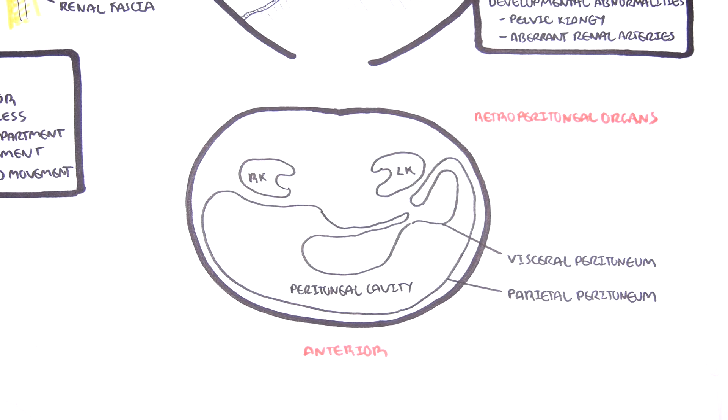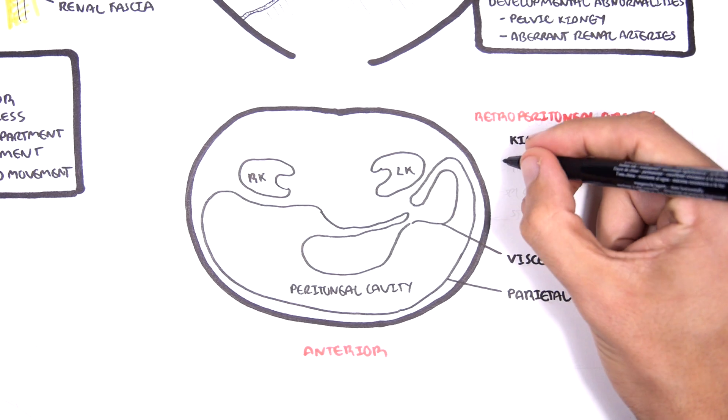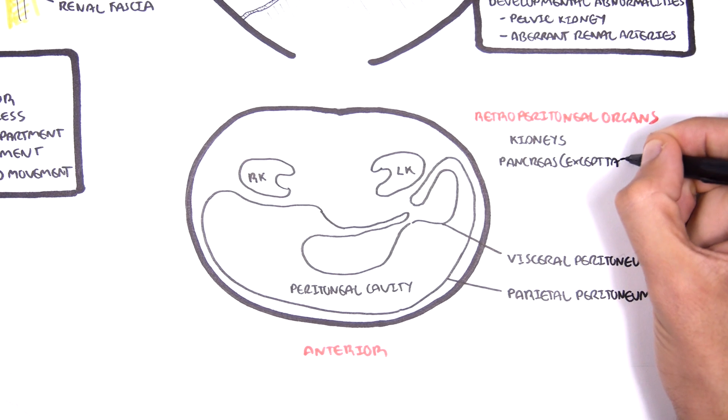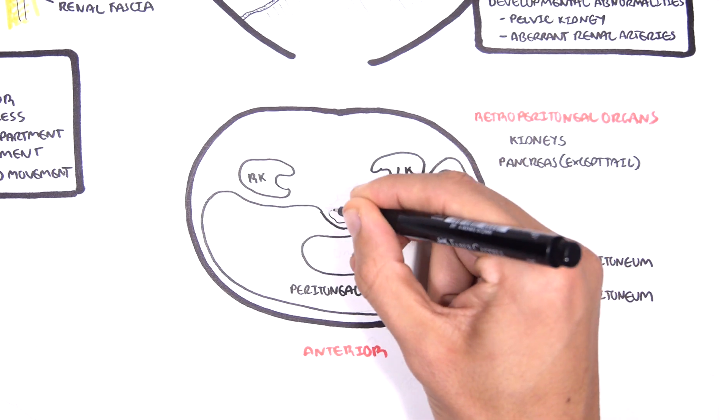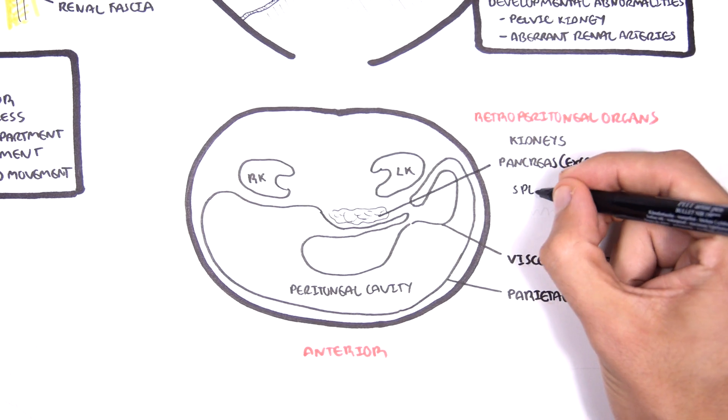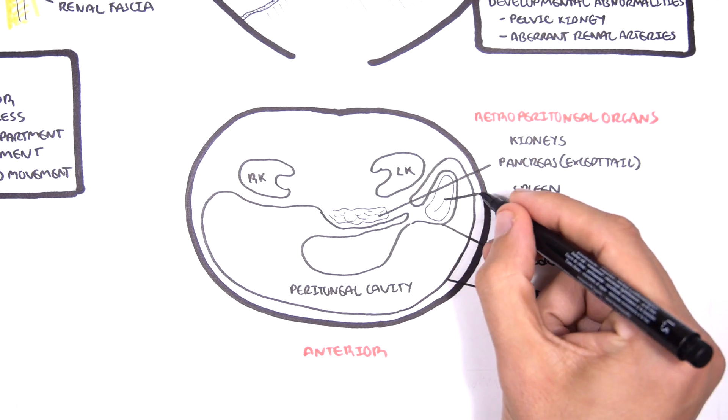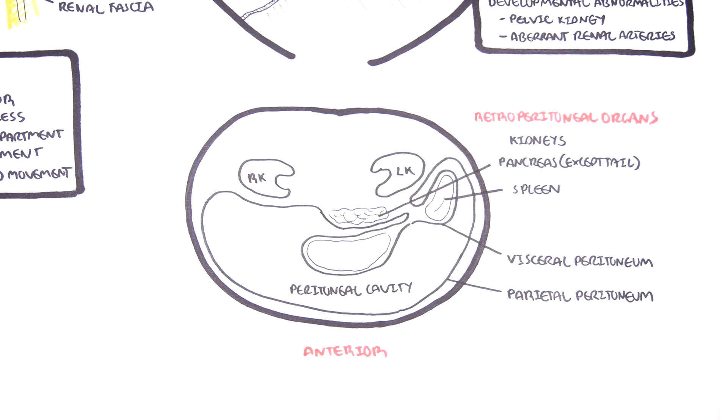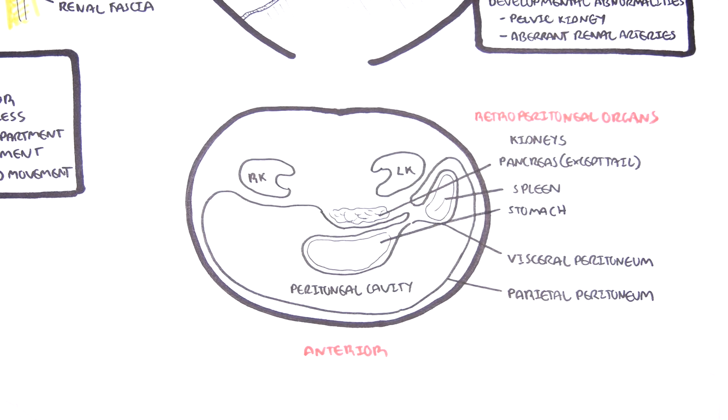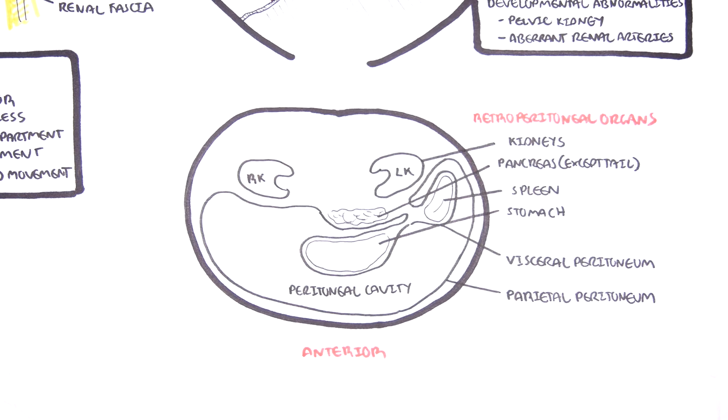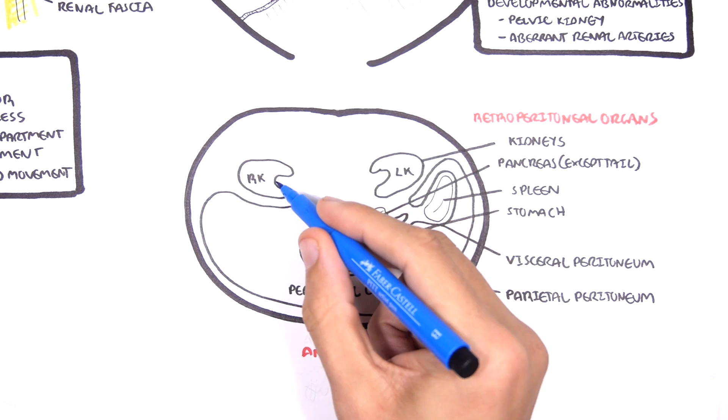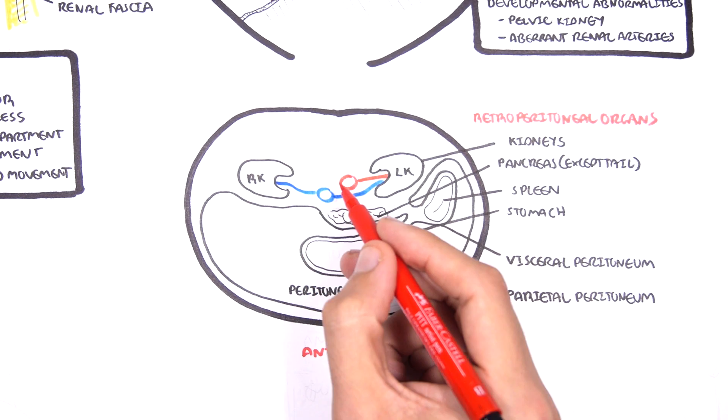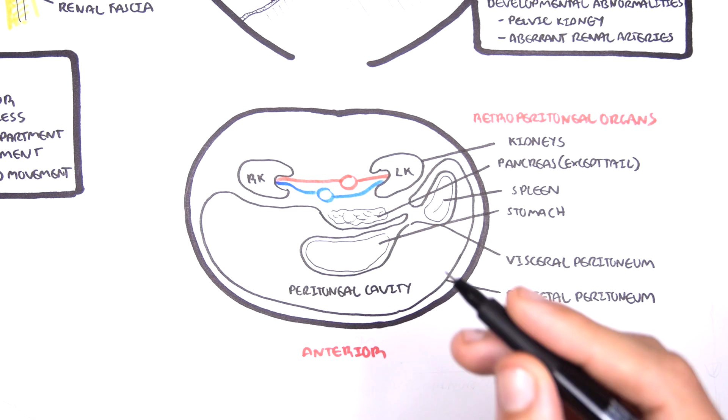Retroperitoneal organs include the kidneys, the pancreas except for the tail of the pancreas, the spleen and the stomach. Just to orientate what we learned about the kidneys, remember the inferior vena cava and the renal veins sit in front of the descending aorta and the renal arteries.